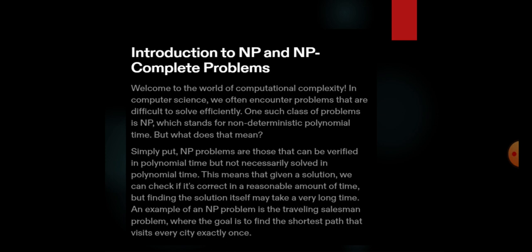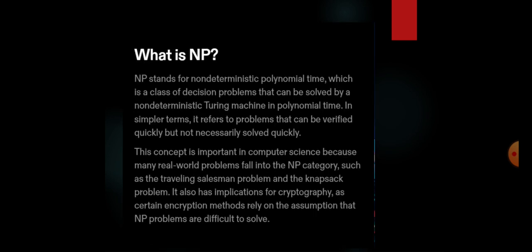This means that for a given solution we can check if it is correct or reasonable in a reasonable amount of time, but we cannot find out the solution for that particular amount of time. That is what we call it as NP problem. An example for an NP problem is a traveling salesman problem where the goal is to find the shortest path for the problem, and the constraint is they have to visit all the cities exactly once.